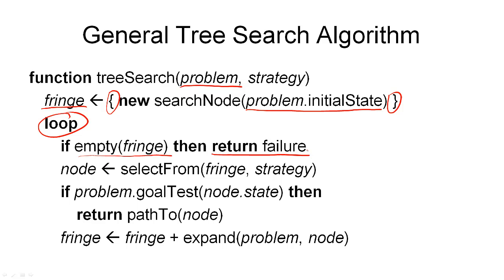We go through a potentially infinite loop. The first thing we do is test whether there are still nodes in our fringe. If there are no more nodes on the fringe, we've explored the whole graph without finding a goal node, so we return failure. Otherwise, we select one node from the fringe using the strategy. We apply the goal test to the state of that node — if it is a goal node, we've found a solution and can return the path to that node.